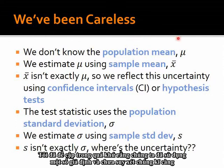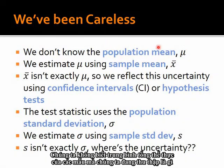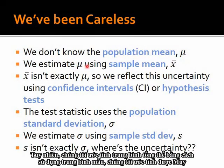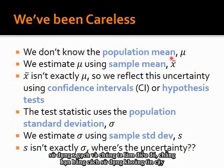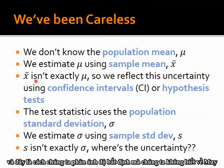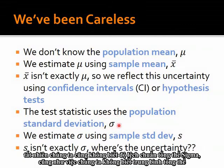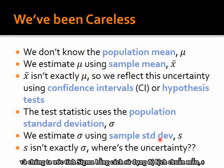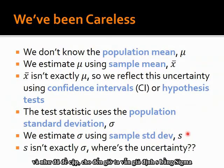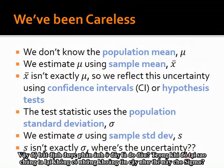We've been taking some assumptions and not fully accounting for them. We don't know the actual population mean of our samples, but we estimate population mean using our sample mean — we estimate mu using x-bar — through confidence intervals and hypothesis tests. However, when we calculate our test statistic, we use the population standard deviation sigma, which we also don't know. We estimate sigma using the sample standard deviation s. Up till now, we've been assuming that s equals sigma, but s is not exactly sigma. So where is that uncertainty reflected?